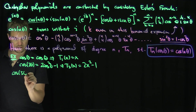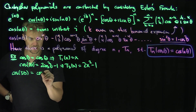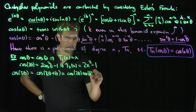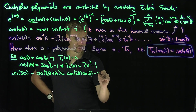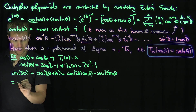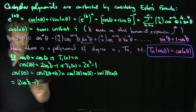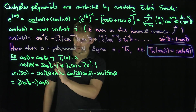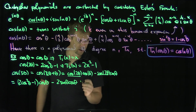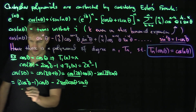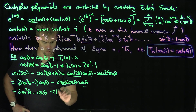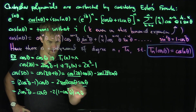For cosine(3·theta), write it as cosine(2·theta + theta). By angle addition: cosine(2·theta)·cosine(theta) - sine(2·theta)·sine(theta). Substituting cosine(2·theta) = 2·cosine^2(theta) - 1 and sine(2·theta) = 2·sine(theta)·cosine(theta), we get (2·cosine^2(theta) - 1)·cosine(theta) - 2·sine^2(theta)·cosine(theta). Replacing sine^2(theta) with 1 - cosine^2(theta) gives 2·cosine^3(theta) - cosine(theta) - 2(1 - cosine^2(theta))·cosine(theta).